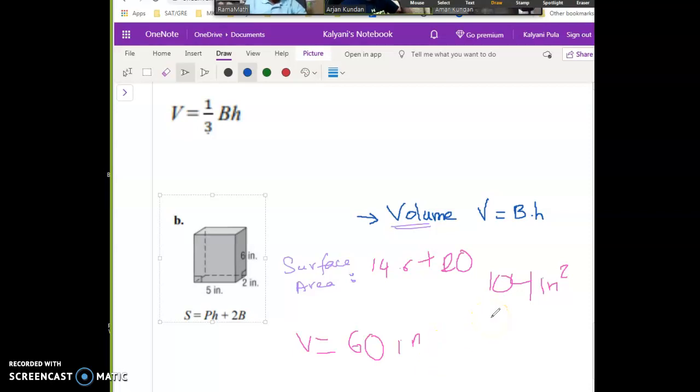Excellent! So the B means base area, and then we have the height. In this case, the base is a rectangle shape, so this is 5 times 2, that is 10, and then times 6, that gives you 60. But there's one thing - a small mistake here. What do you think? Is this in square when it is an area?